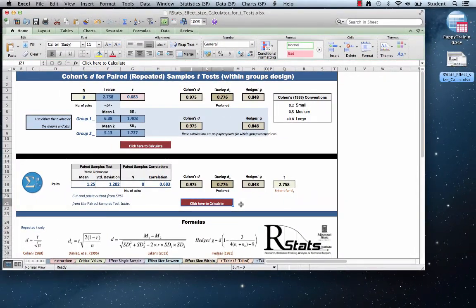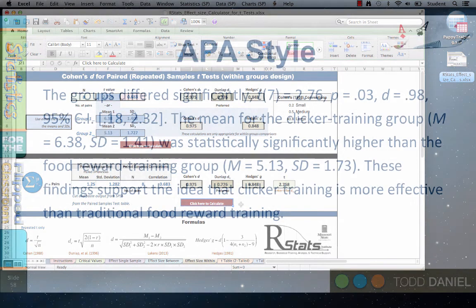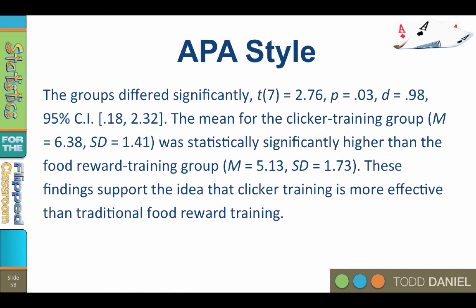Here is how we would write up these results in APA style. The groups differed significantly. The mean for the clicker training group was statistically significantly higher than the food reward training group. These findings support the idea that clicker training is more effective than traditional food reward training. You can see that I included the means and standard deviations for each group, as well as Cohen's D effect size and the confidence intervals. The last statement about the meaning of the findings would go in your discussion section if you were writing this up for a paper.